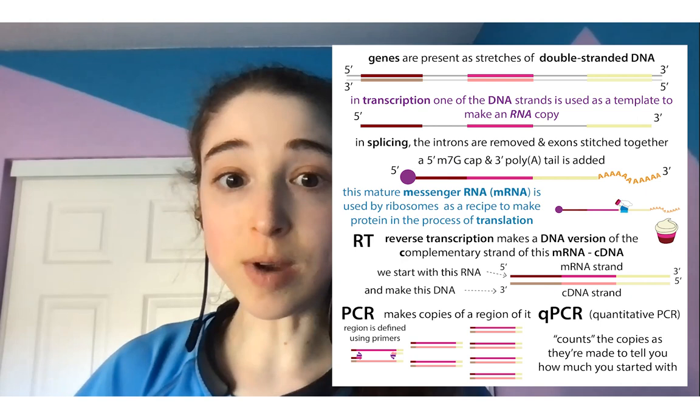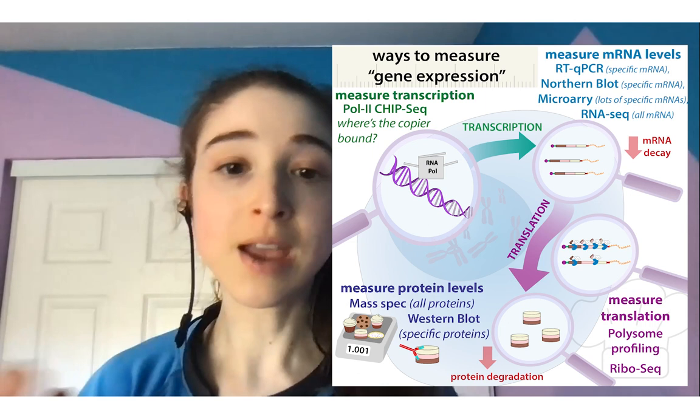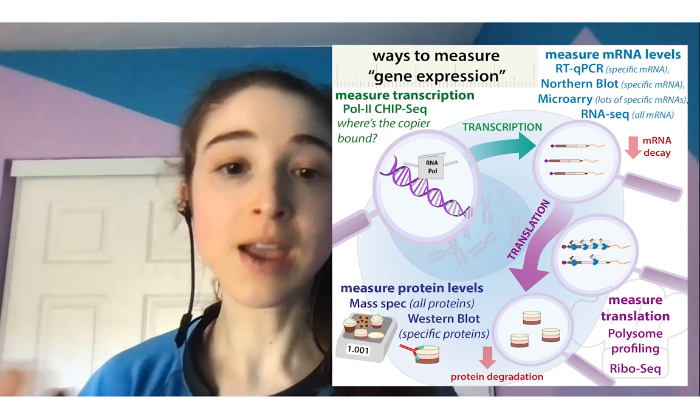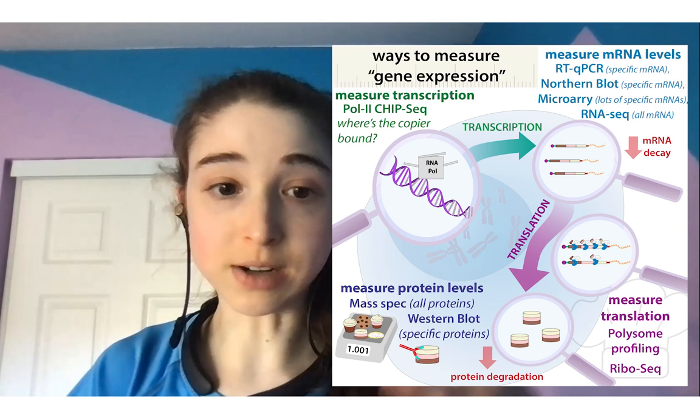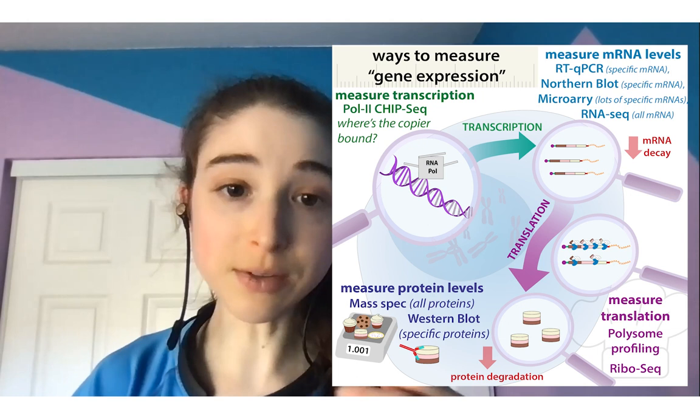Another important factor is how much the ribosomes are actually being used. If you have a bunch of 'It's a Small World' rides but no one's on them, it's not really popular. Cells can control the amount of protein made by controlling the number of ribosomes on each messenger RNA copy, in addition to controlling the number of copies. Ribosome profiling adds on top of qPCR information to figure out how well messenger RNAs are actually being translated.